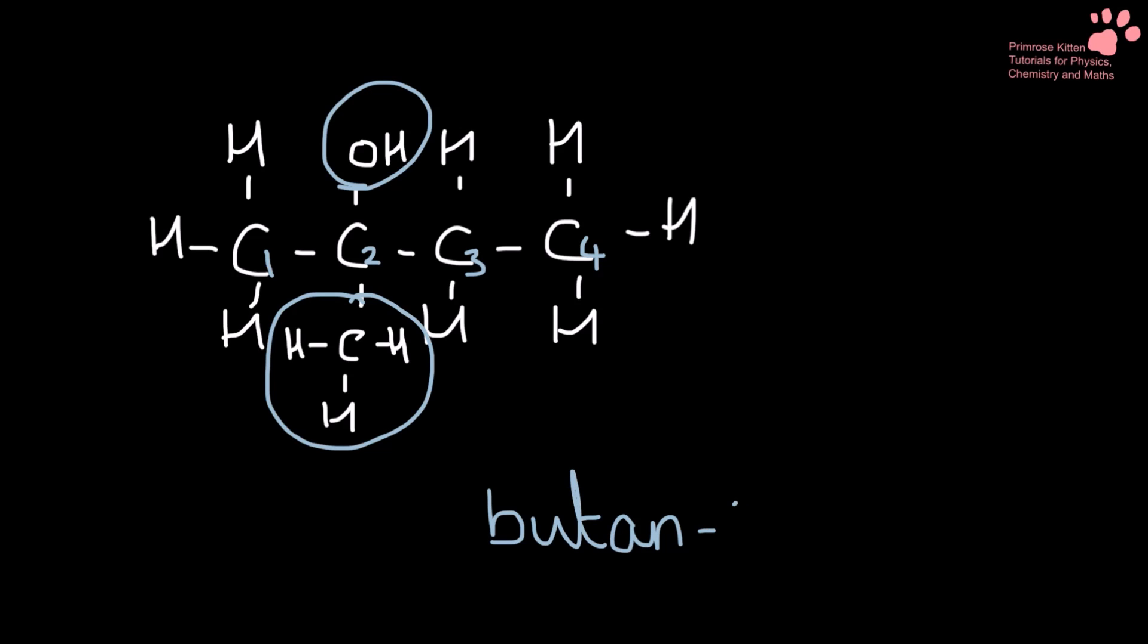The alcohol group is in number two. So it's 2-ol. And then we need to look at the little branch. That is a methyl group and it's on carbon number two. So that becomes 2-methyl-butan-2-ol.